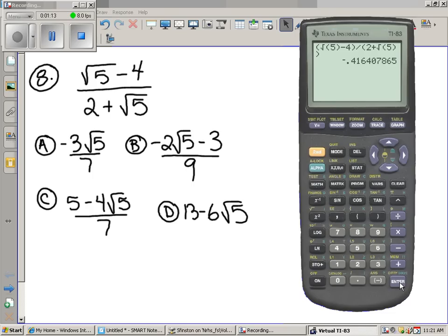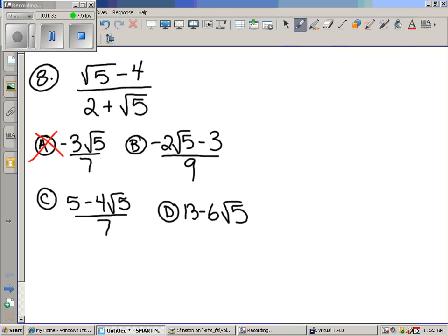Let's take a look at A to give you an example. I'm not going to plug in each one, but let's plug in A. Parenthesis, negative three, radical five. Close the bracket for the five, close the bracket for the top, divided by seven. That one doesn't work. So you're out.